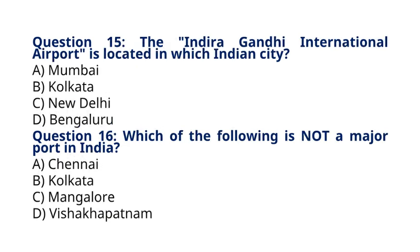Question 15: The Indira Gandhi International Airport is located in which Indian city? A. Mumbai, B. Kolkata, C. New Delhi, D. Bangalore. The correct answer to question 15 is option C, New Delhi. The Indira Gandhi International Airport serves as the primary airport for the National Capital Region of New Delhi.